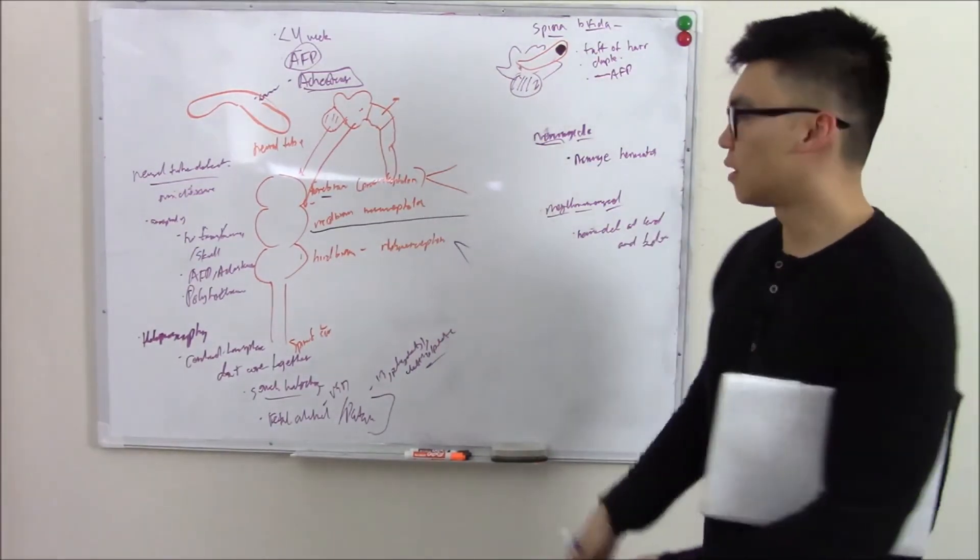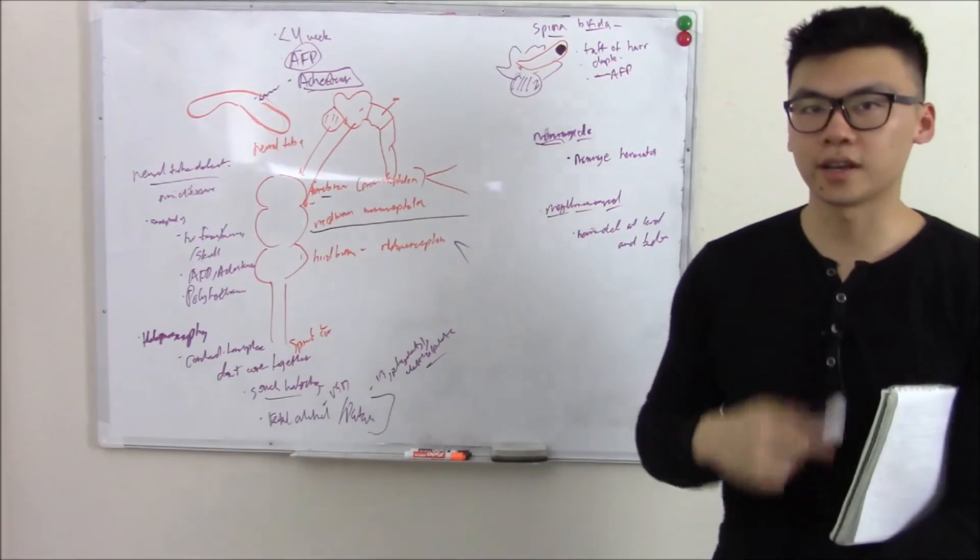So that is how your neural tube forms. That is what can go wrong. Hope you enjoyed the video. See you next time.